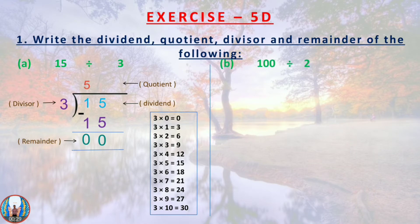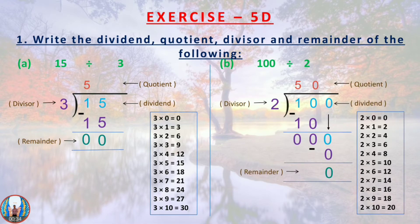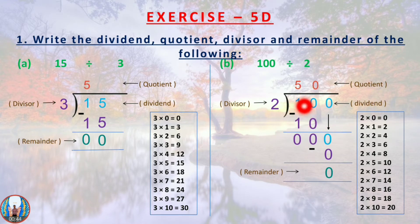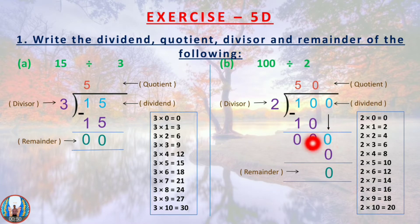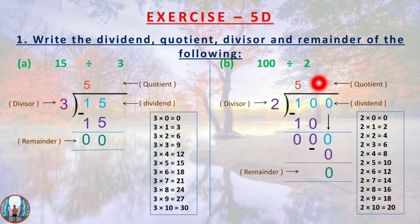The second question: 100 divided by 2. Since 1 is less than 2, we take 2 digits at first, that is 10. 2 fives are 10, we subtract 10 minus 10 to get 0, then bring down the 0. 2 zeros are 0. So 2 is the divisor, 100 is the dividend, 50 is the quotient, and 0 is the remainder.